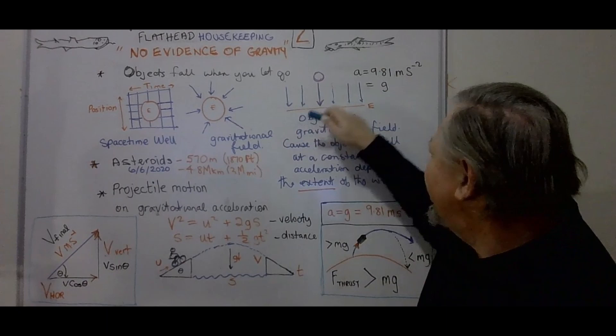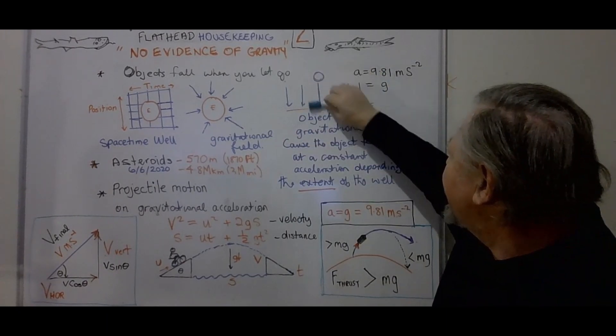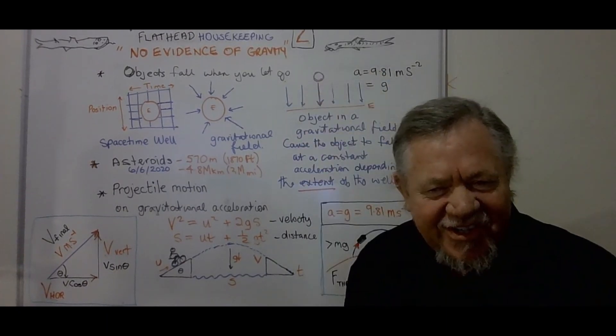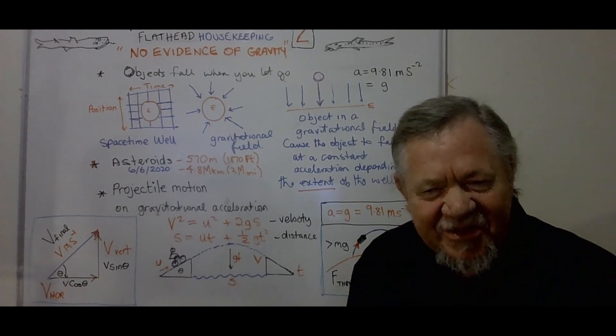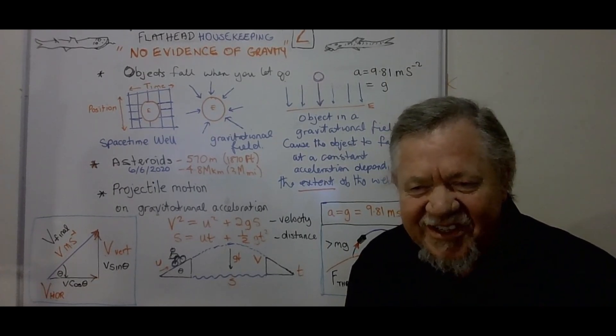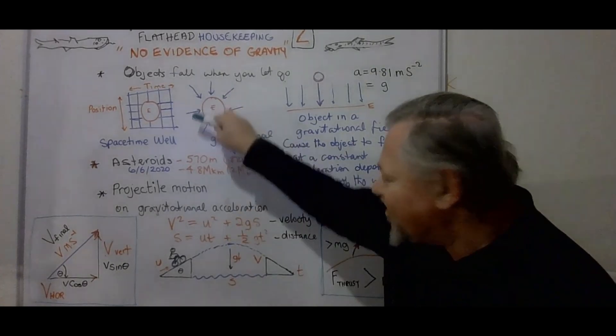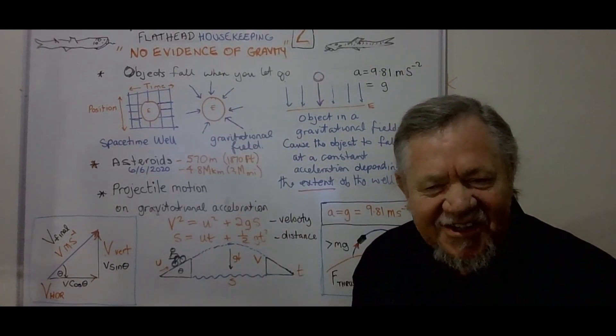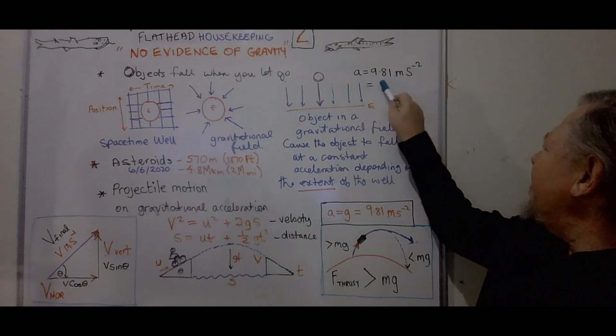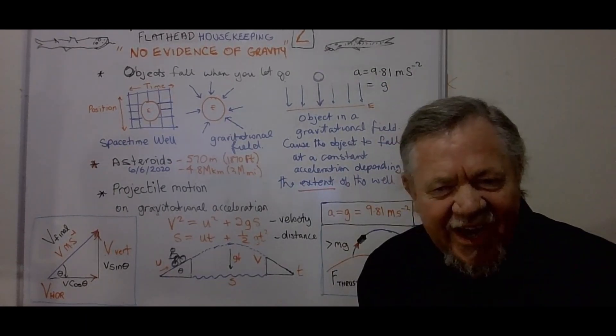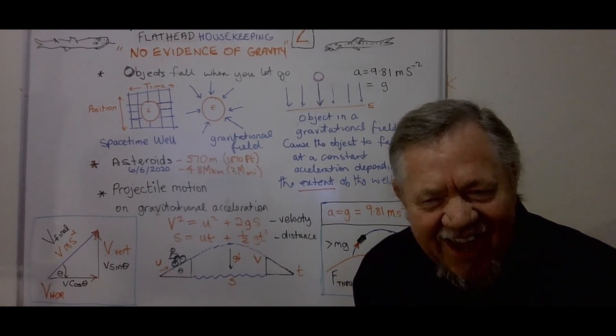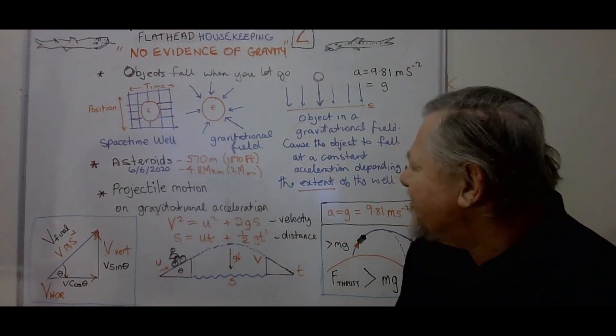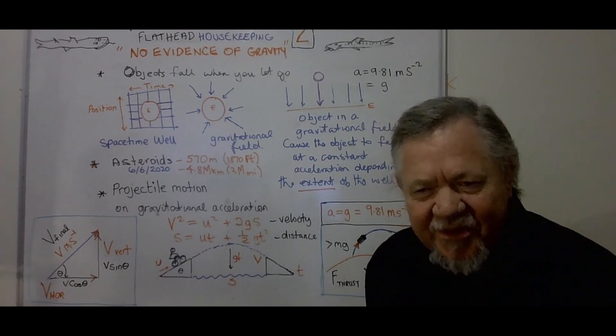What we see is things falling to the earth at the same time. Why do they fall to the earth at the same time? Because they're all in the same gravitational well. Because they're all subject to the same gravitational field. That's why they fall at the same time. And it happens to be a measurable 9.81 meters per second squared. You know something Mr. Nathan Oakley and Mr. Riley, you can actually measure that.